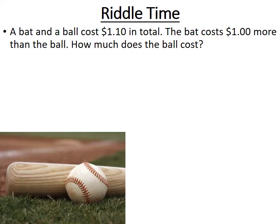For a challenge, try this riddle: a bat and a ball cost $1.10 in total. The bat costs $1 more than the ball. How much does the ball cost? Think carefully — there's a wrong answer most people jump to. If you solve it using variables, the answer is quite doable. Let's set it up: call the bat X and the ball Y.